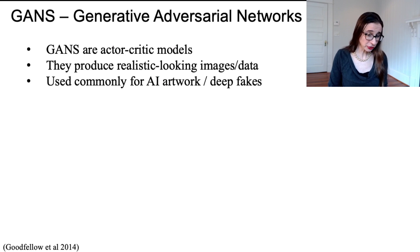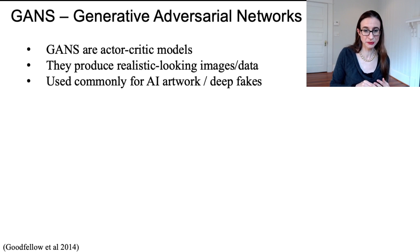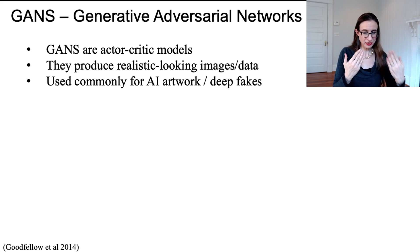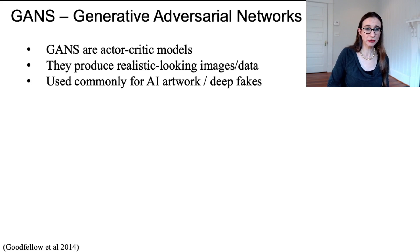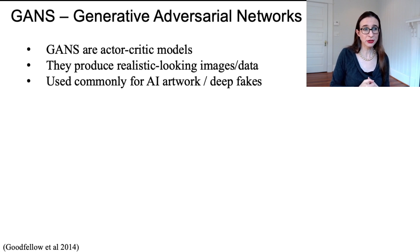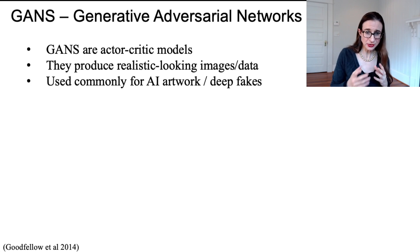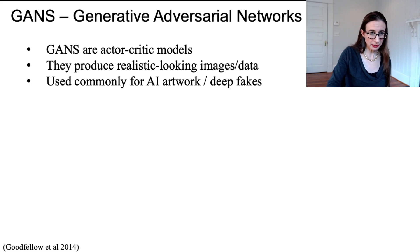GANs are actor-critic models. Actor-critic models have been around for a long time, and GANs are a very successful instance of them. There's an actor and a critic — the actor tries to do the best job they can, the critic says you're not doing well enough, and the actor improves. GANs produce very realistic-looking images or data. They can be used for scientific data to create larger data sets, and for testing scientific discovery algorithms on fake data. GANs are also commonly used for AI artwork and deepfakes.